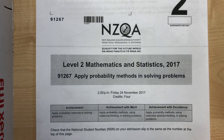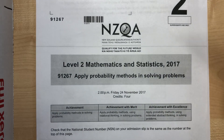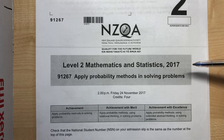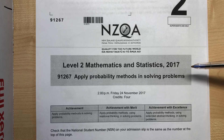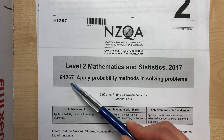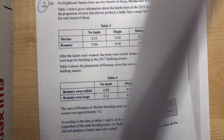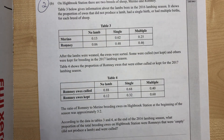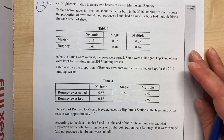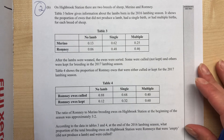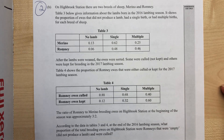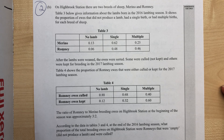We are finishing off this paper — probability external 91267, NCEA Level 2 — and we are on question 2 part B. I'm going to give you a second, just pause the video and read this question because it's very long with a lot of information and I don't want to waste time on the video reading through it all.